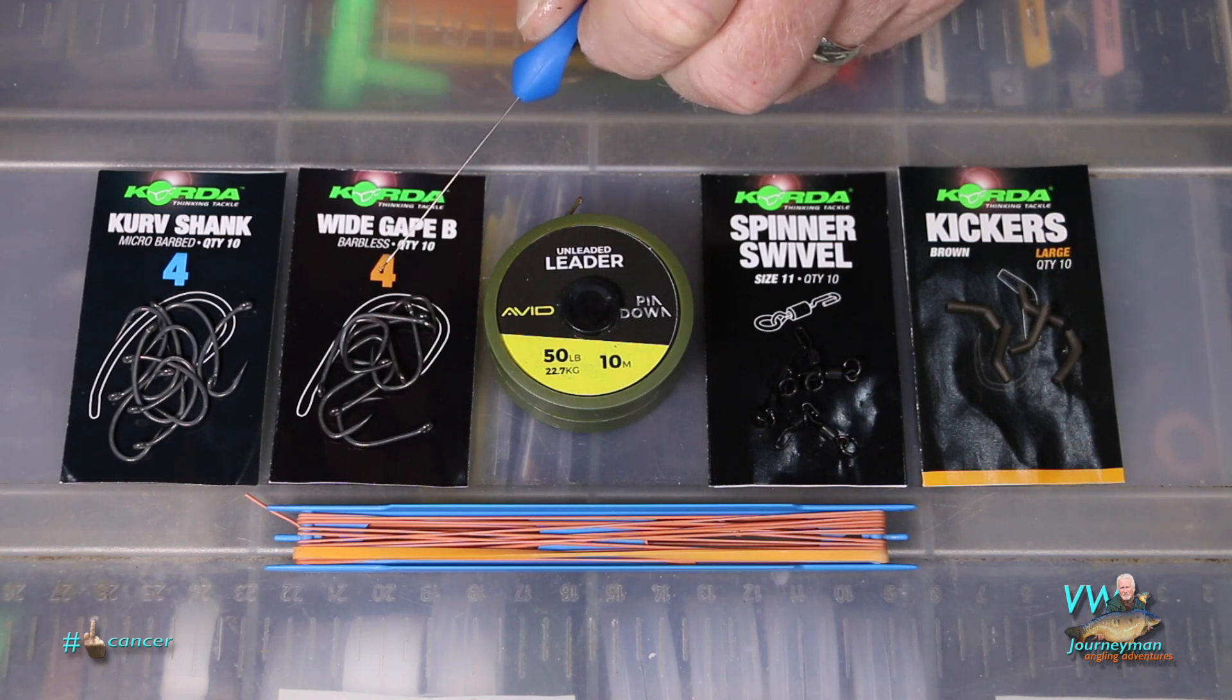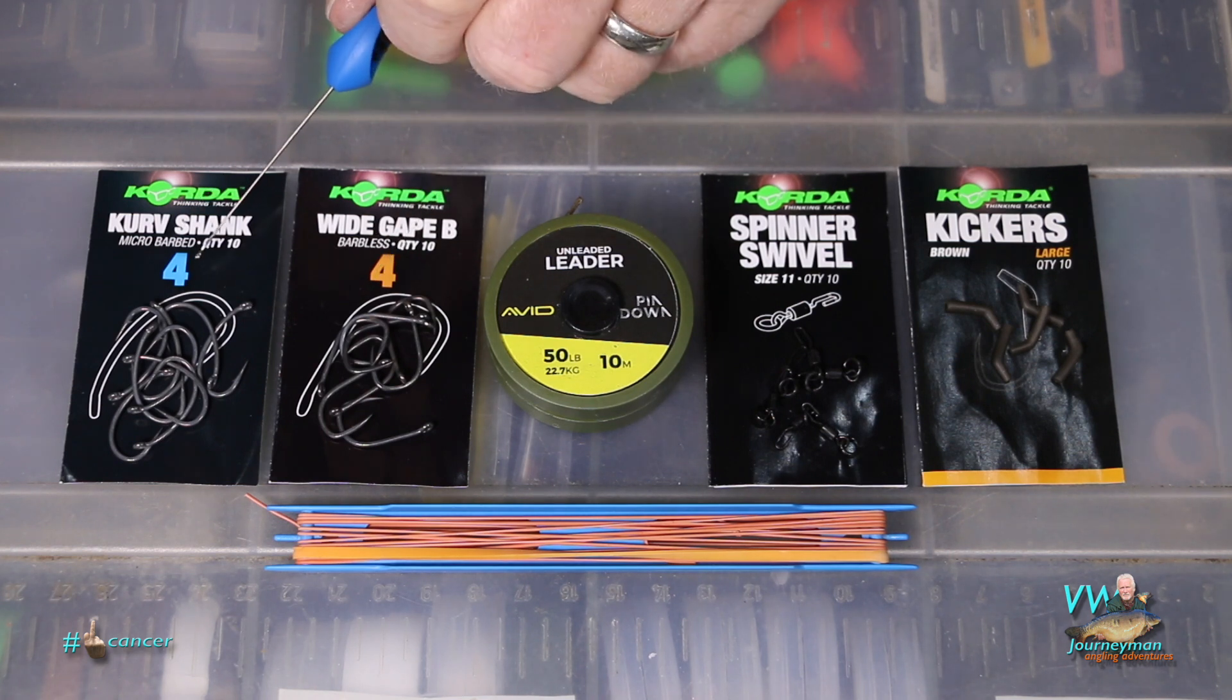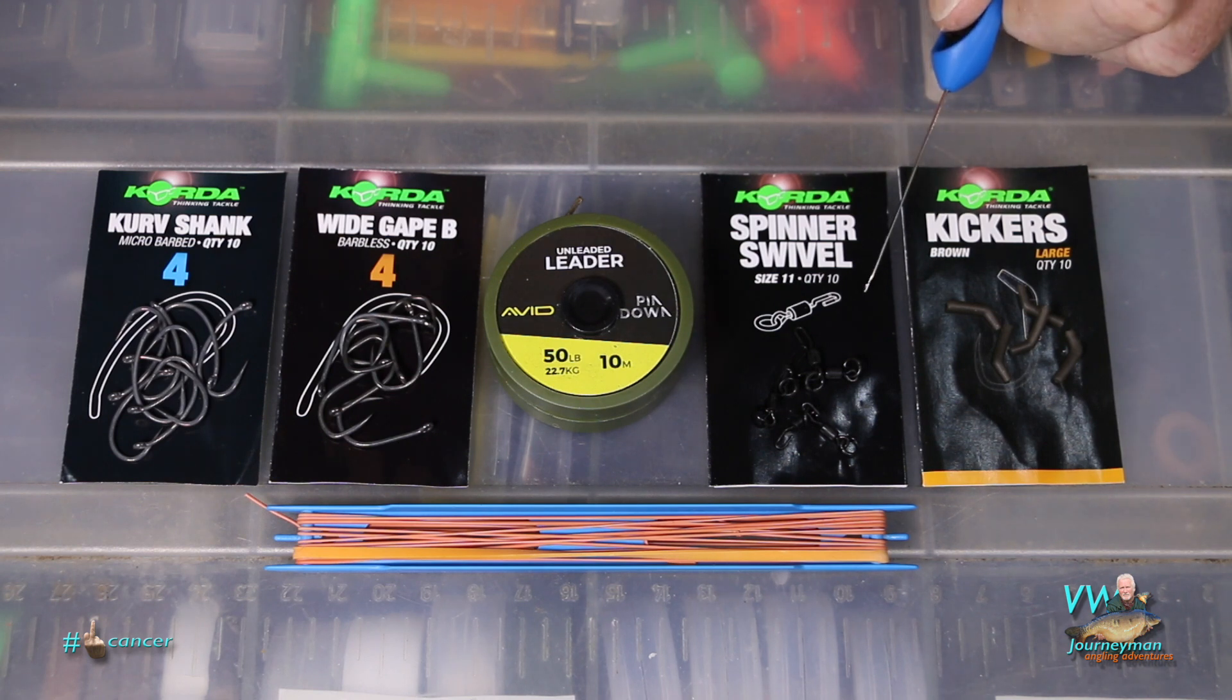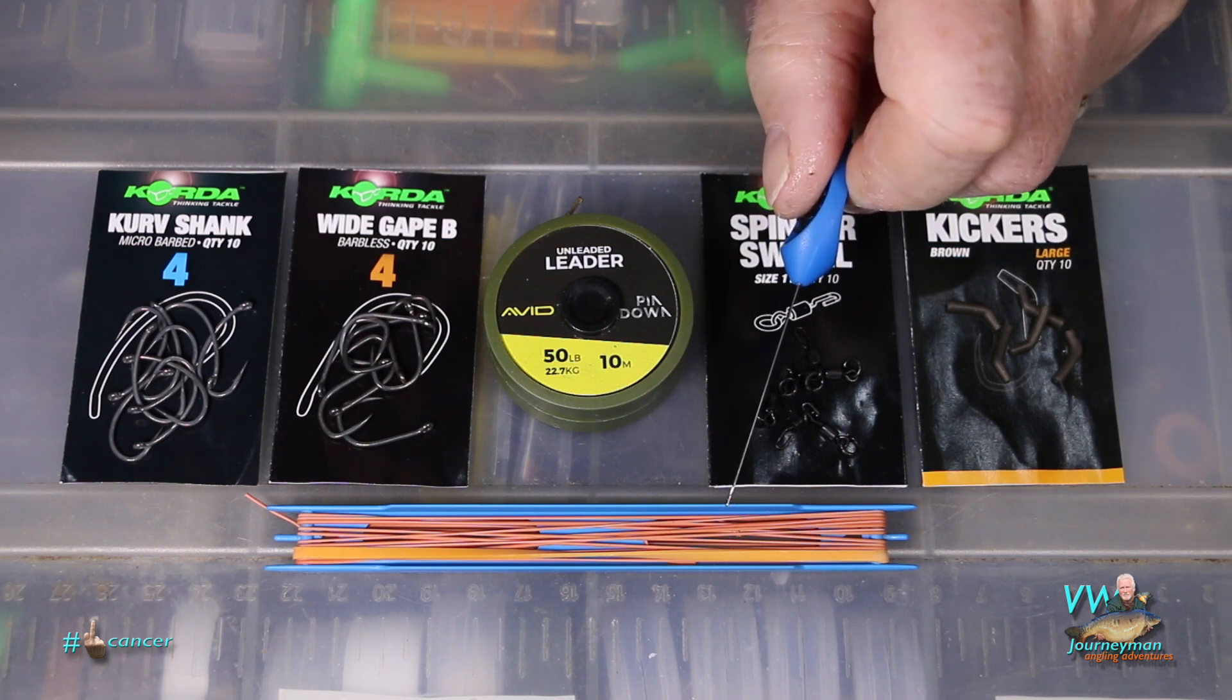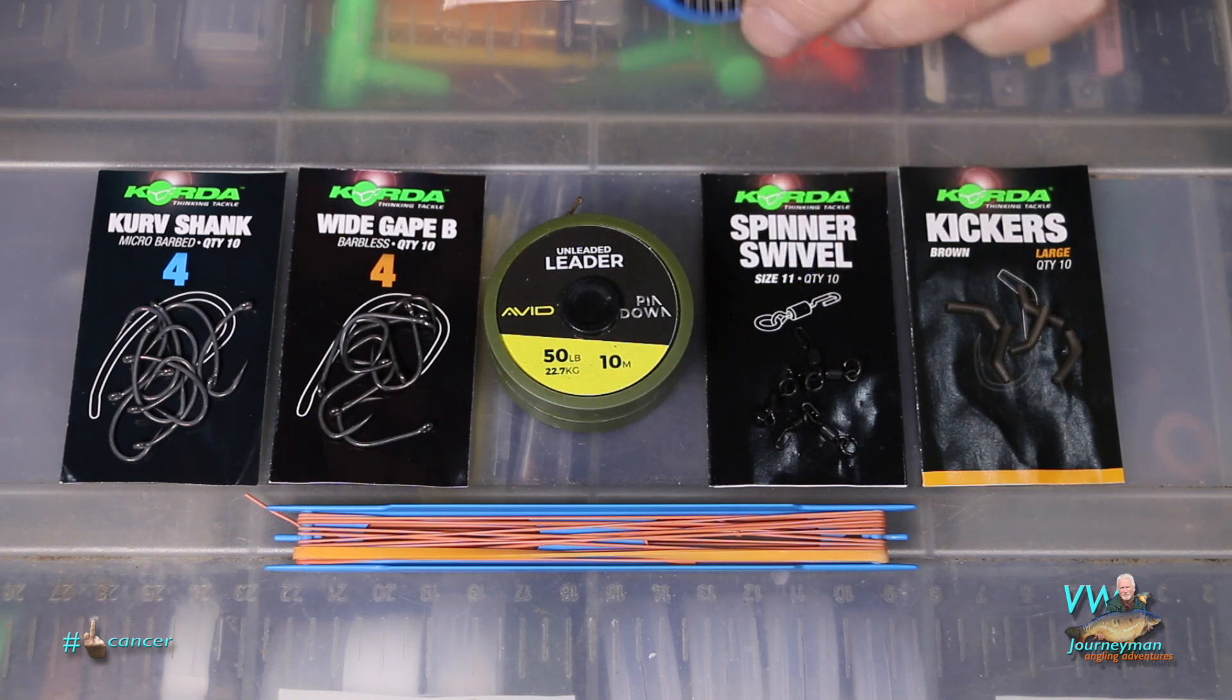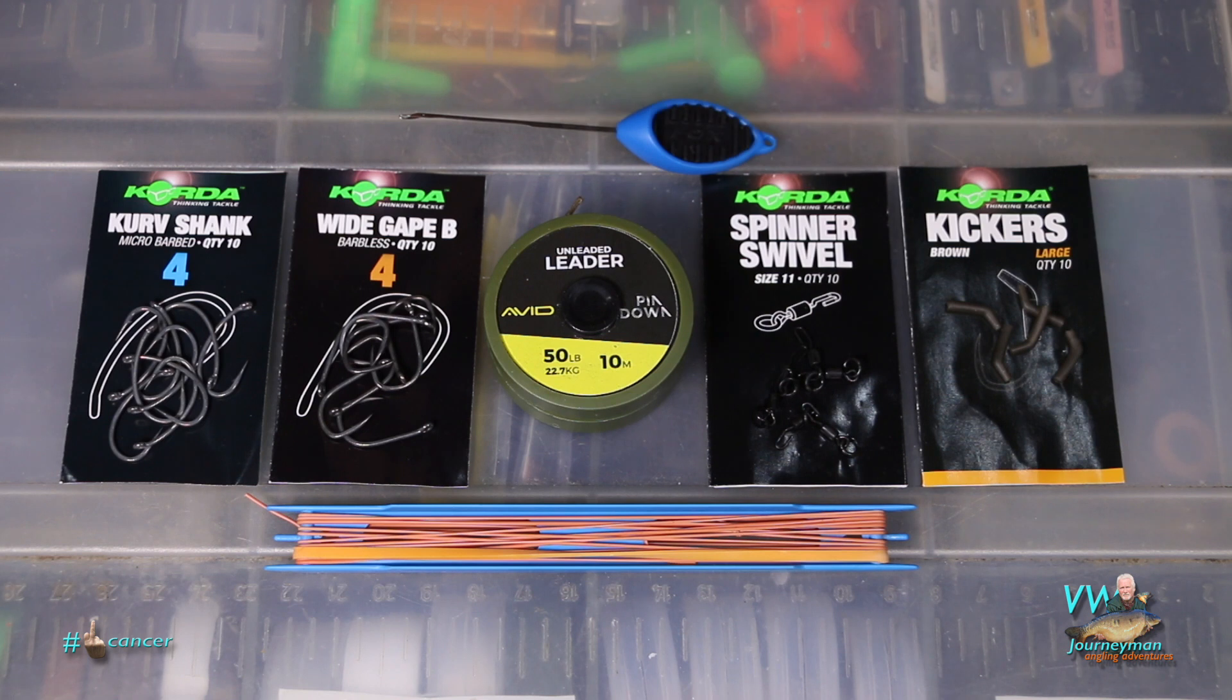If it's not barbless then I'll use my favorite curve shank hook. The hook link material is the fifty pound Avid pin down, and that's attached to a spinner swivel to hold the hook in place, and then to stop the hook coming off, use a large kicker. There's some number three pole elastic and of course a splicing needle.